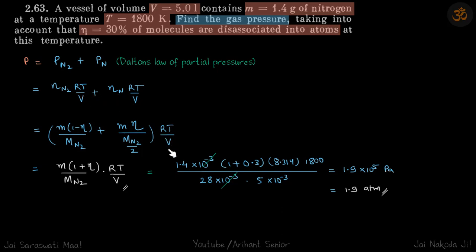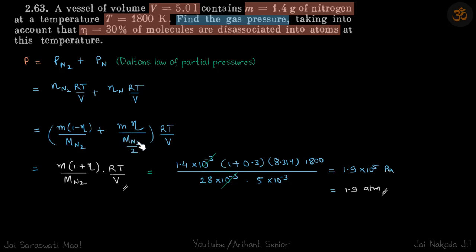RT/V will be common. Because 30% of the molecules are dissociated, this is by mass. The number of moles of N₂ will be mass of N₂ divided by molecular mass of N₂. The number of moles of nitrogen atoms will be mass of nitrogen atoms — which is M times η — divided by the molecular mass of N, which is M_N₂ divided by 2.